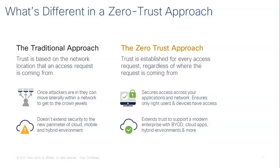In addition to better access security, the Zero Trust approach also supports modern enterprise models — like BYOD, securing cloud applications, or hybrid applications. Zero Trust has three tenants. The first is to eliminate implicit trust, where we assume all traffic, regardless of location, is a potential threat. Every request must be verified, authorized, and inspected before access is granted — even if the user is located inside what appears to be a secure network zone.